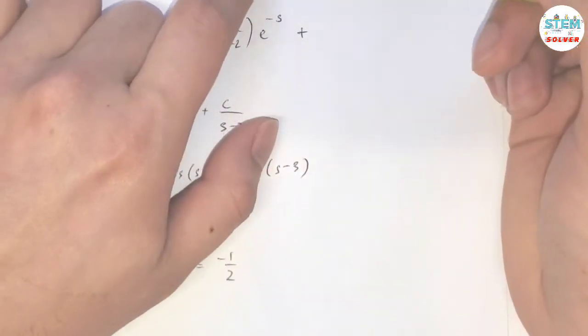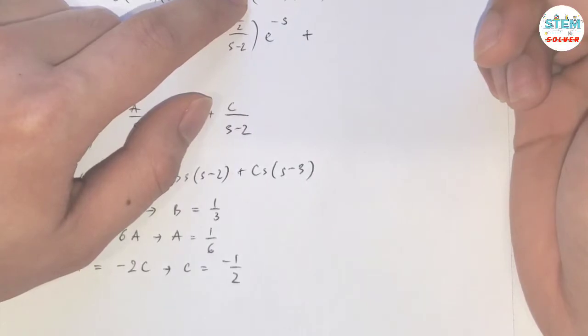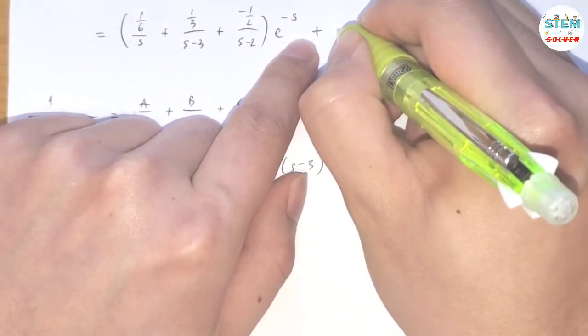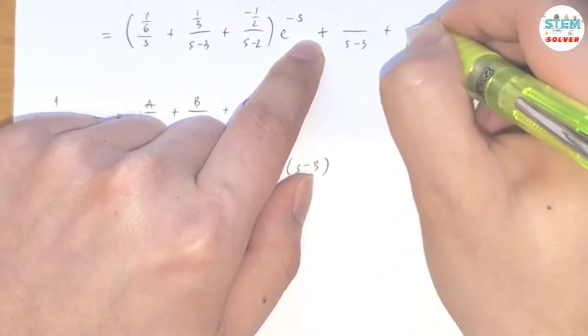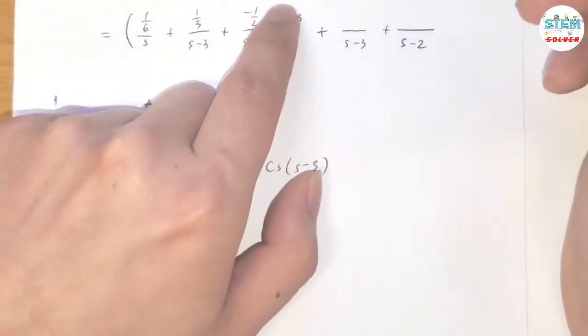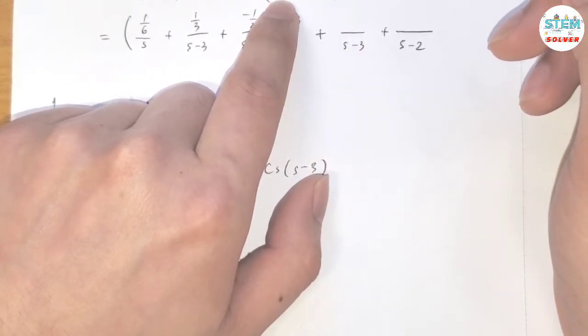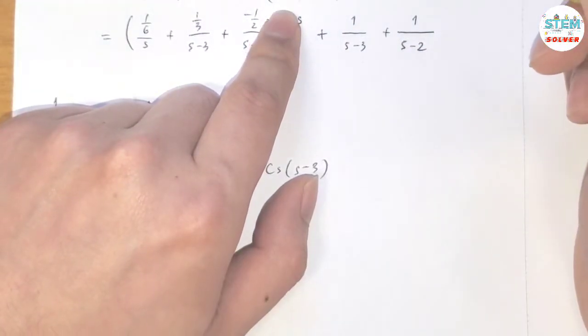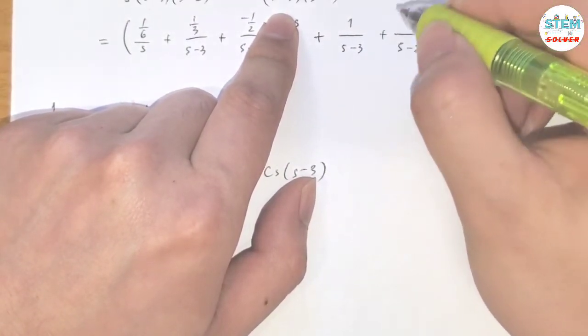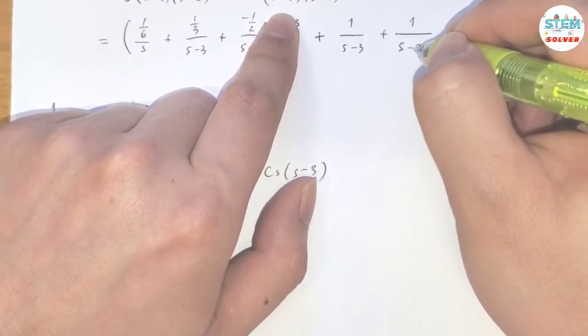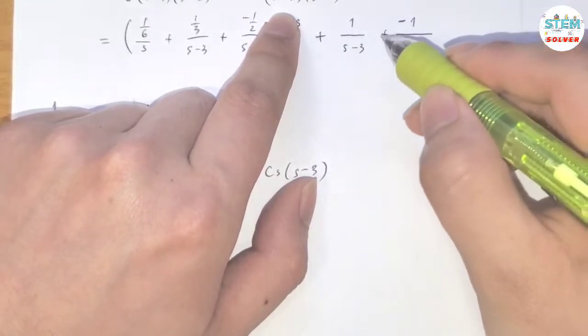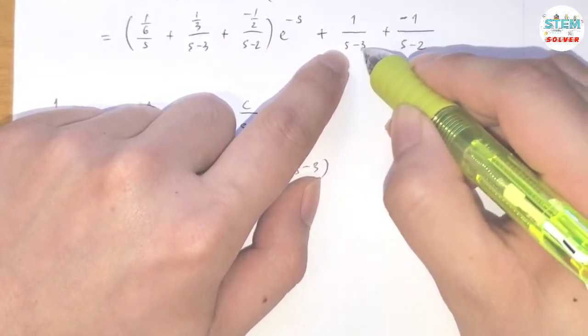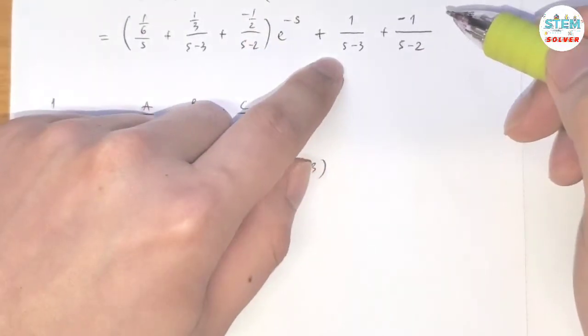Now for this one, we need to have something over s minus 3 plus something over s minus 2. And if you notice, they are off by 1. Negative 3, negative 2, they are off by 1, so we need to have 1 on top. And the next step is to determine which one has the negative sign. The negative sign will go with the bigger one, which is this. So let's check by cross-multiplying: negative s, positive s, negative 3 times negative 1, positive 3 minus 2, positive 1.